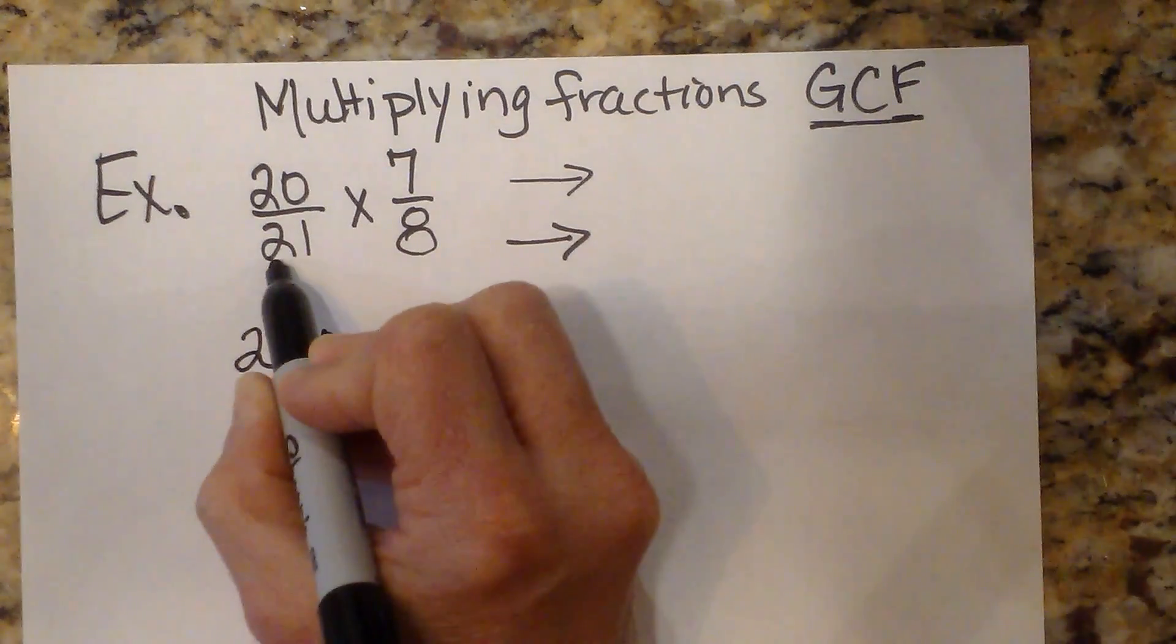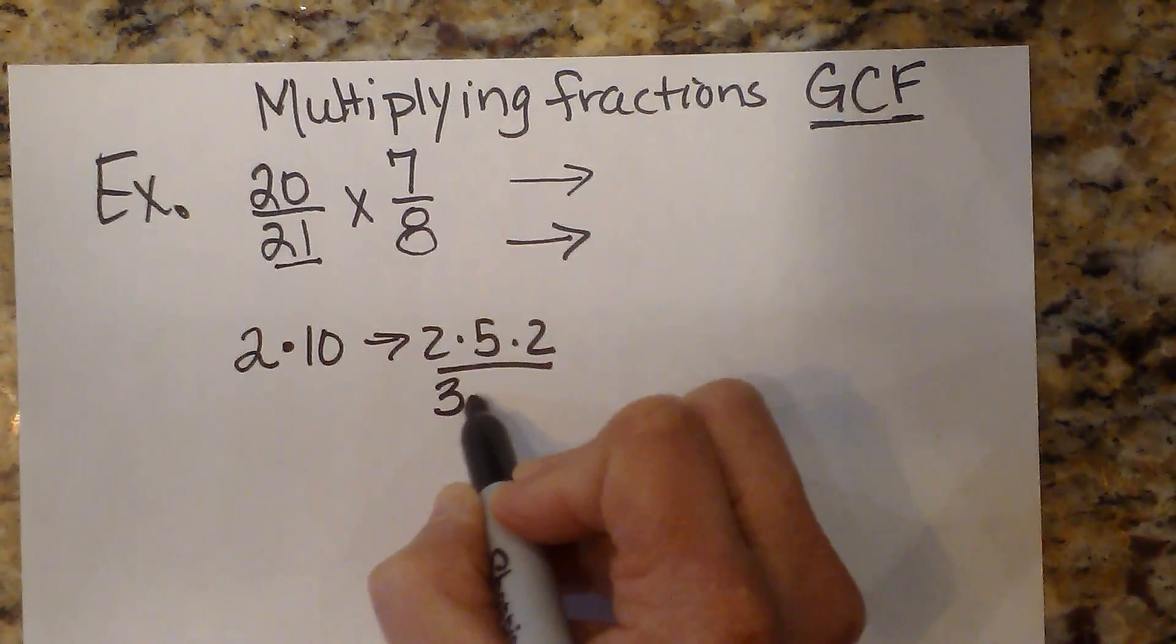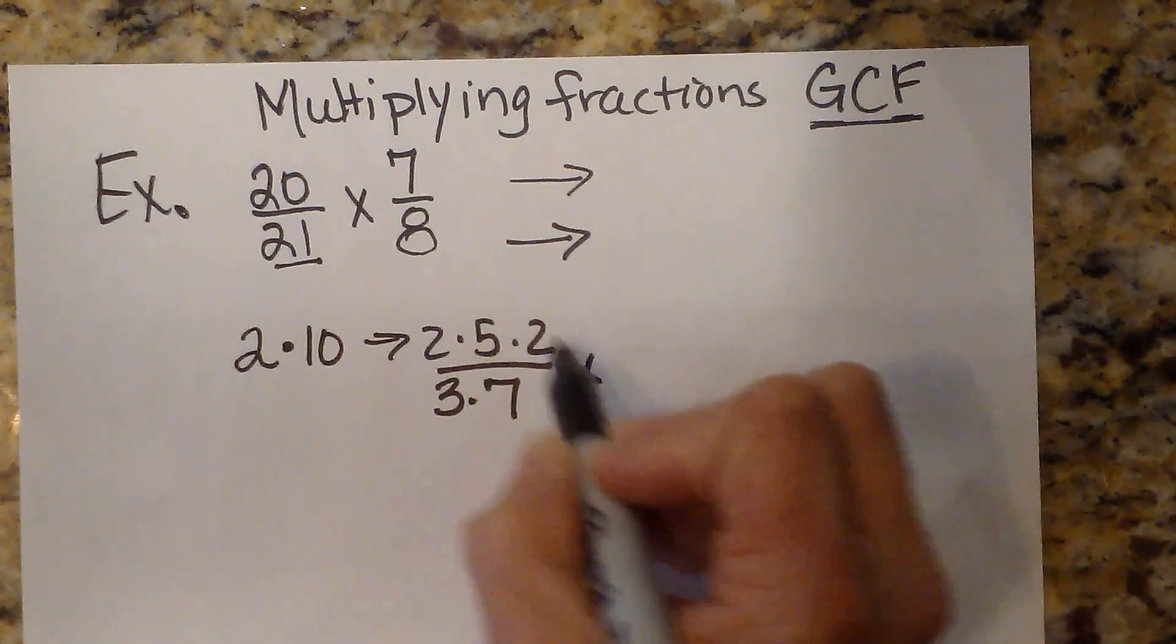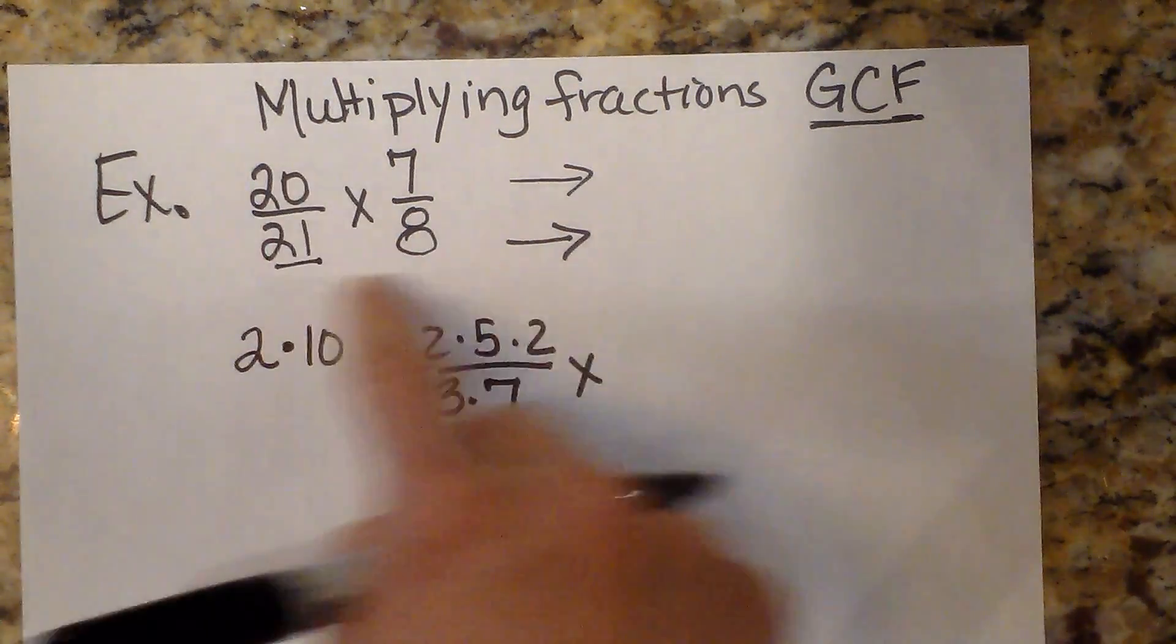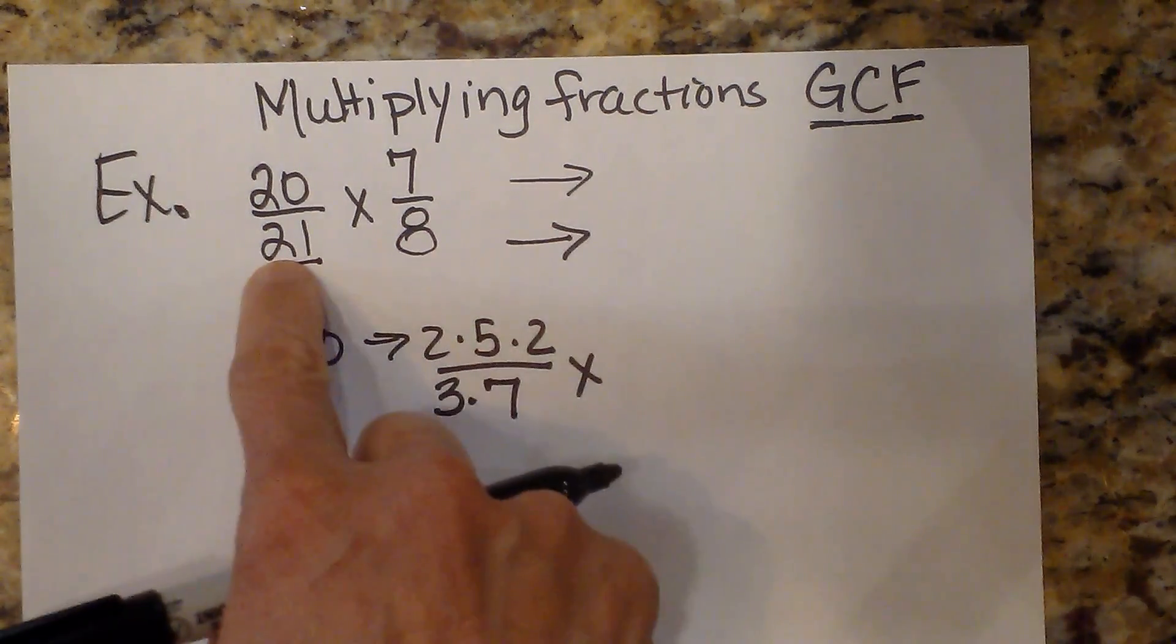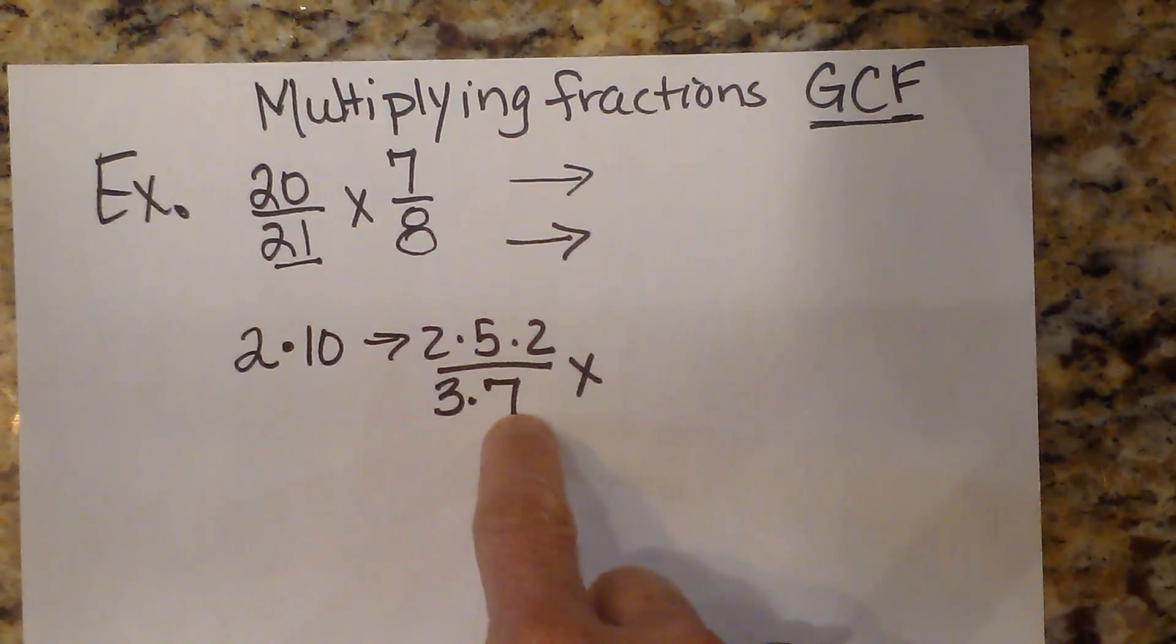And then I'm going to take 21 and I'm going to factor it to 3 times 7. So I've got my first term factored, 20 over 21, as 2 times 5 times 2, and then 21 factored as 3 times 7.